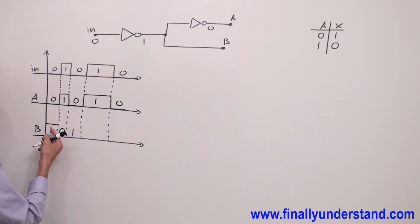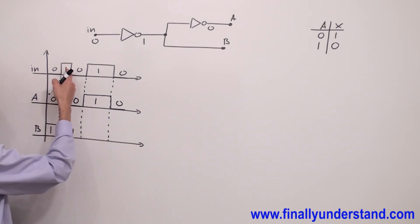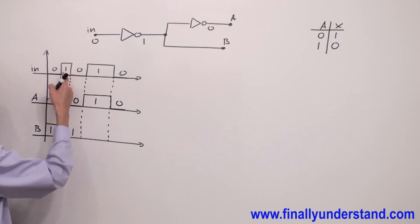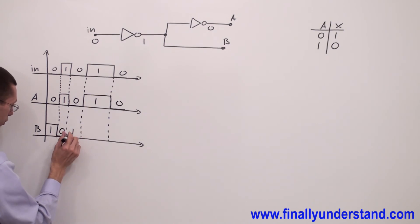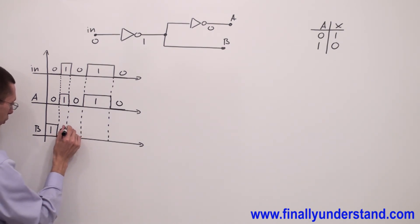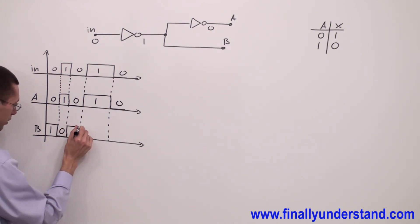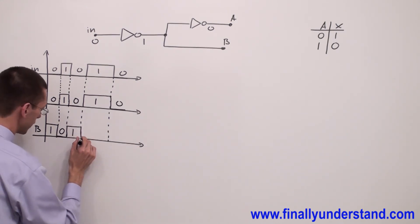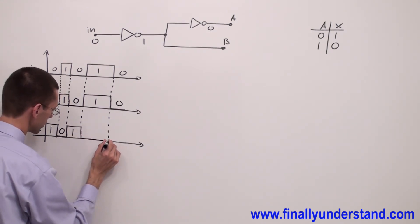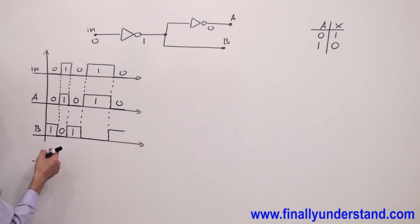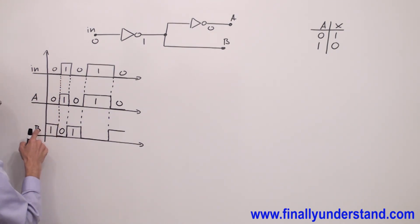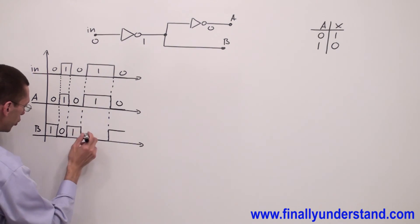Now for point B — we have the complement of the input. When input is one, point B is at zero. The waveform at point B is nothing else but the complement of the input waveform. That's why I'm just going to draw the inverted input waveform at point B.